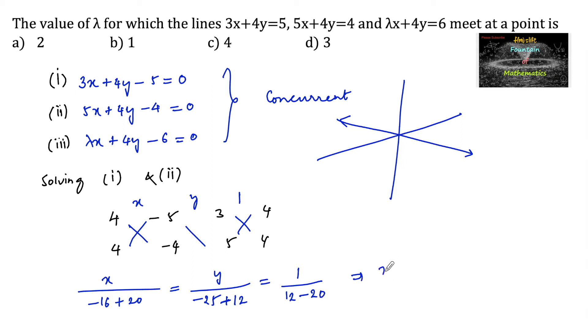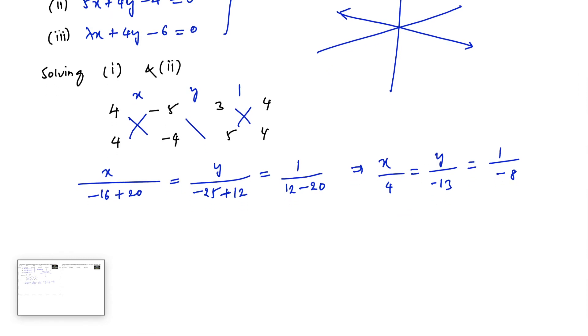So x upon 20 minus 16 that is 4 equals y upon minus 25 plus 12 that is minus 13 equals 1 upon 12 minus 20 is negative 8. So x equals 4 upon minus 8 and y equals minus 13 upon negative 8. So x equals minus 1 by 2 and y equals 13 upon 8.